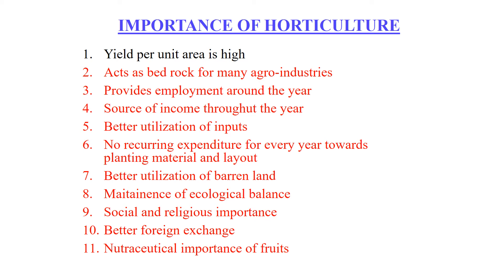Better utilization of barren land is another advantage. Lots of wasteland, barren land, and dryland are available in India, and that land can be efficiently utilized by growing fruit crops like ber, aonla, tamarind, custard apple, jamun, wood apple, coronda, and jackfruit.